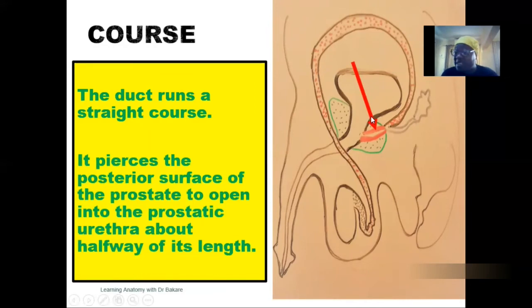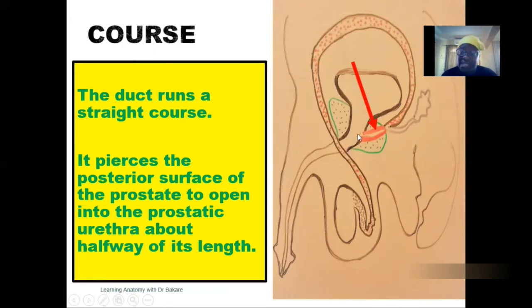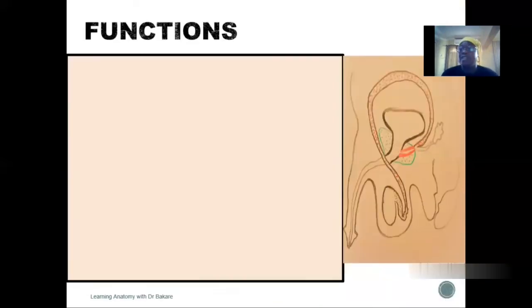Immediately after the urinary bladder we have the pre-prostatic urethra, and from this region down we have the prostatic urethra. About halfway along the length of the prostatic urethra is where the ejaculatory duct empties into, which justifies its short length of about 2 cm.